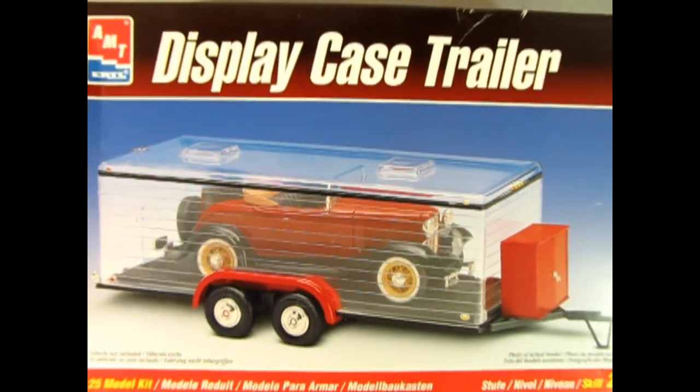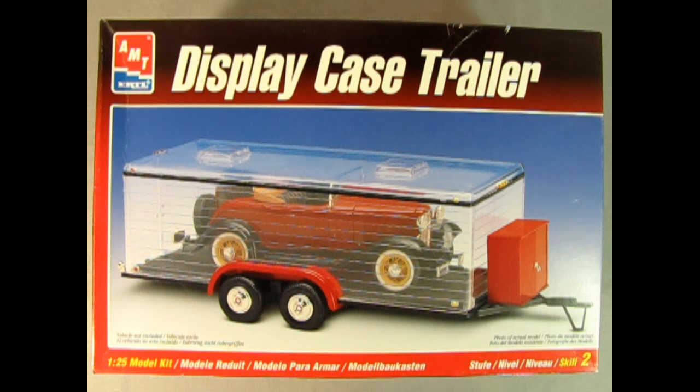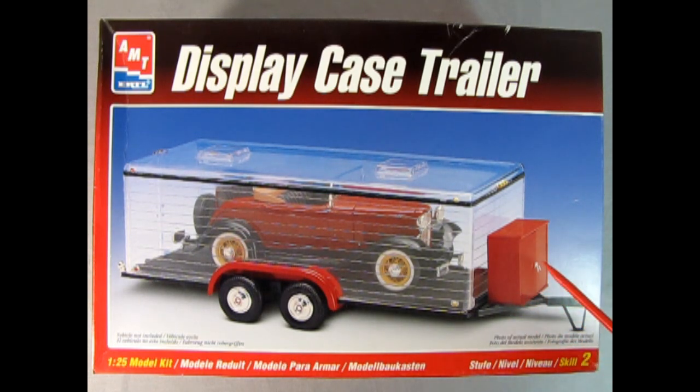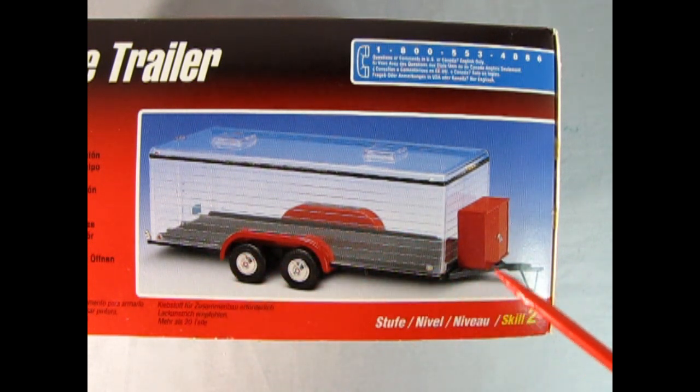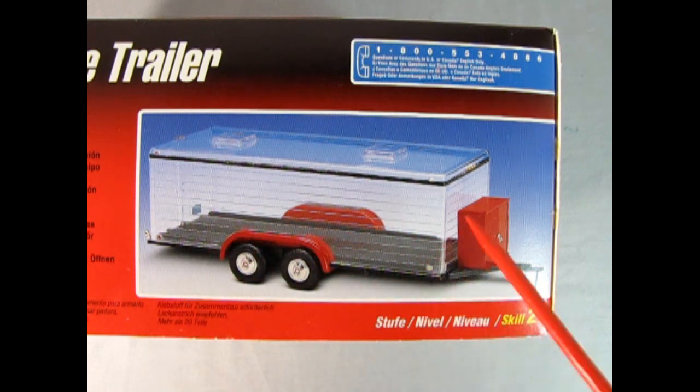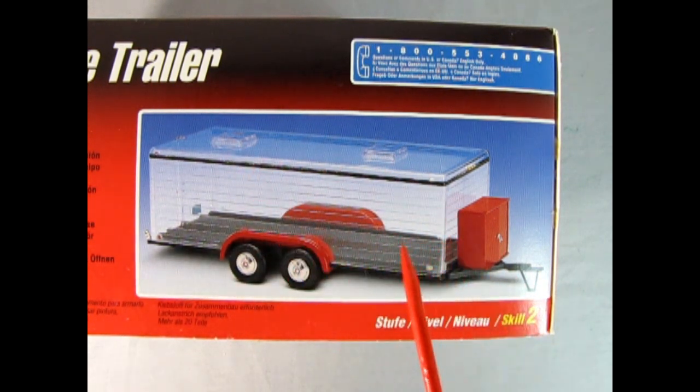We're going to take the Model Kit Time Machine all the way back to 1998 as we check out this amazing AMT Ertl Display Case Trailer. So what we're seeing here is the display case trailer on the front of the box and inside is AMT's 1932 Ford Rumble Seat Roadster. But we're not going to be looking at the Roadster, it's just the case. The car is not actually in there. This is still a great model kit for skill level two and it does have a wonderful little cabinet right here with some great garage parts. On this side of the box, we can see the trailer without the car in it and there is a lot of room in here for any of your AMT model cars.